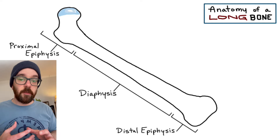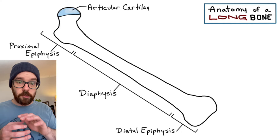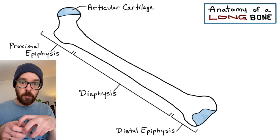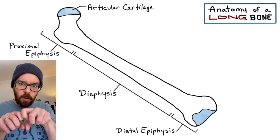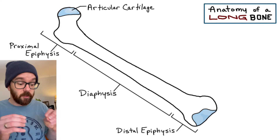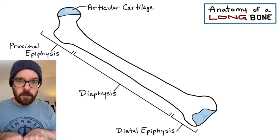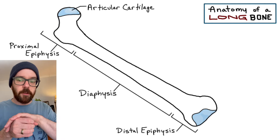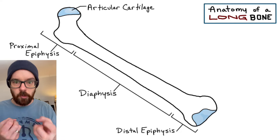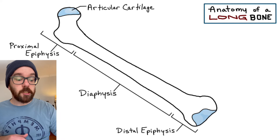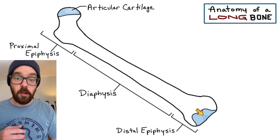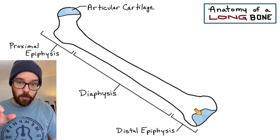On either end of the bone, we have something called the articular cartilage. The articular cartilage is a layer of cartilage that covers the end of the bone where it forms a joint with another bone. Our bones are very rough, so if bones were rubbing against each other, that would cause a lot of friction and osteoarthritis — which is exactly what happens when this cartilage breaks down. The purpose of the articular cartilage is to form a smooth, low-friction area so that when we move our joints, it doesn't damage the bone.